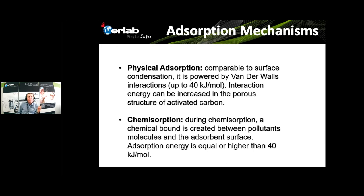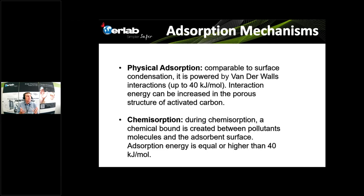Physical adsorption is very useful to trap non-polar solvents, but less efficient for polar molecules. That is why we also define a second type of adsorption called chemisorption. During chemisorption, we create chemical bonds between the pollution and the surface of the activated charcoal, and in that case there is no risk of desorption at all. When you want to trap a mix of VOCs, it is very important to achieve both types of adsorption: physical and chemical.